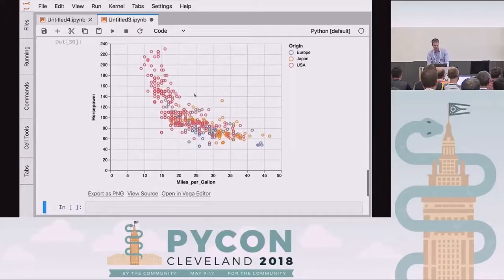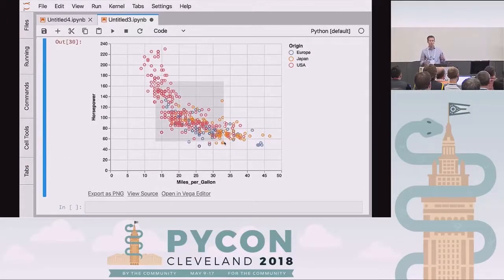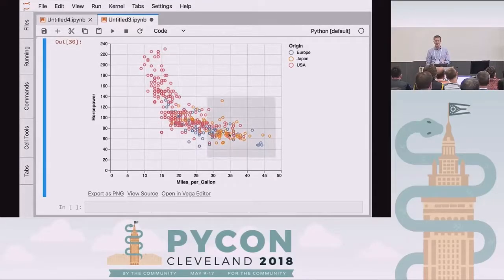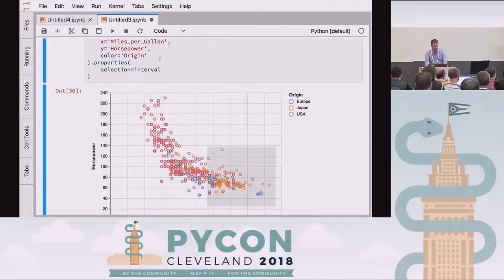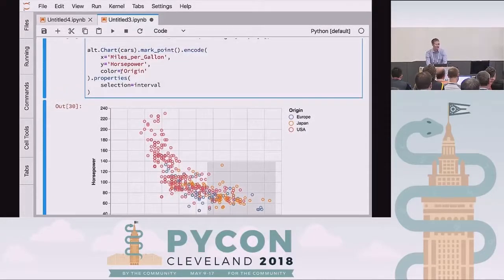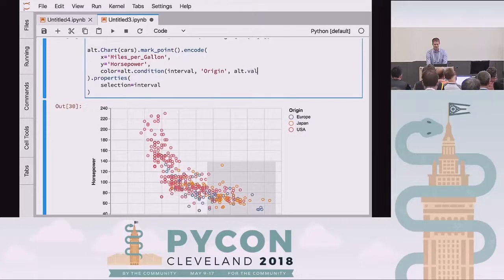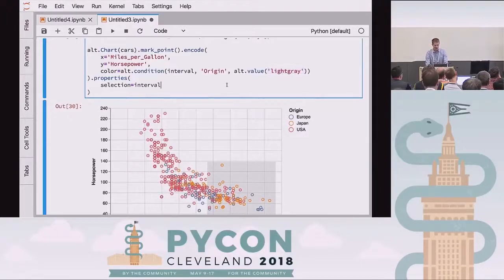You have this box that moves around. The interesting thing is that once you have this selection, every time you move it, there's a signal happening in the renderer saying the selection has changed and these are the points in the selection. Where things get really interesting is if you start making properties of the chart conditional on the selection. So let's say we want the color to be conditional on the interval — if it's inside the interval, we want the color to reflect the origin. If it's outside, we want the color to be a value we'll call light gray. You need alt.value here because otherwise it would interpret light gray as a column name, so you specify that this is actually a color name.